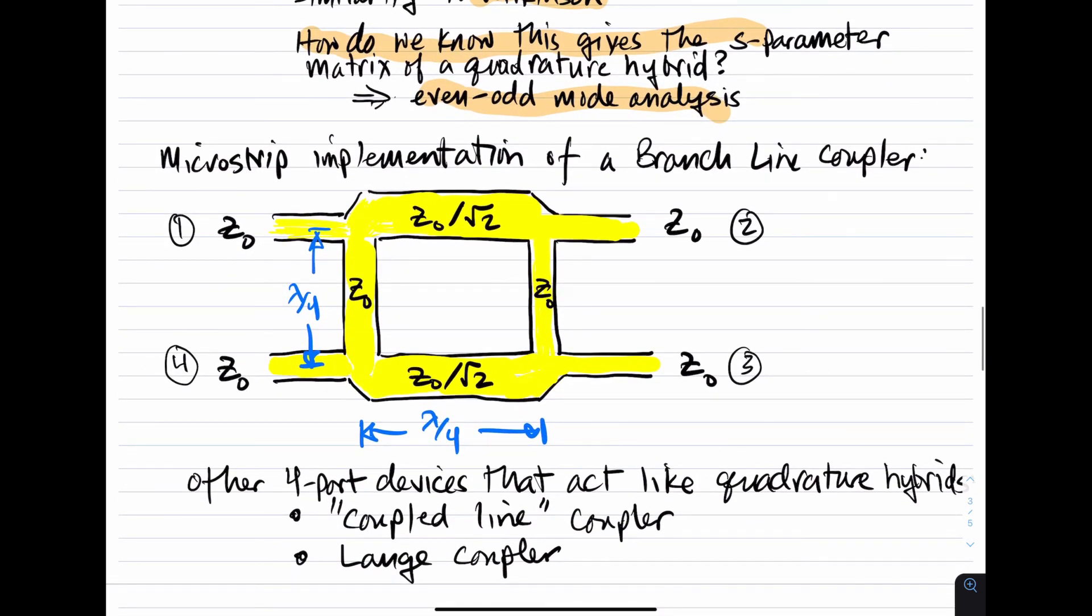A particular implementation of a branch line coupler, and hence a quadrature hybrid, is shown here. Here we have ports one, two, three, and four. We see the transmission lines, we see the characteristic impedances. And we note here that the lines on the top and the bottom here are wider. They're wider because their characteristic impedance is smaller.